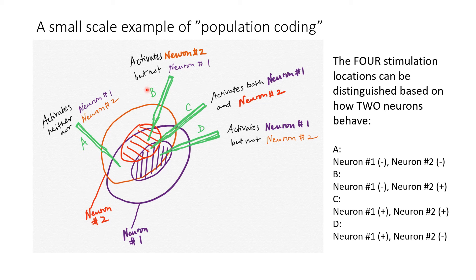Stimulus B, in comparison, is the on-center of neuron 2, but happens to be in the off-surround of neuron 1. So we have a plus sign for neuron 2 and a negative sign for neuron 1. In this fashion, we can use the activation pattern of these two neurons to decode four different locations.